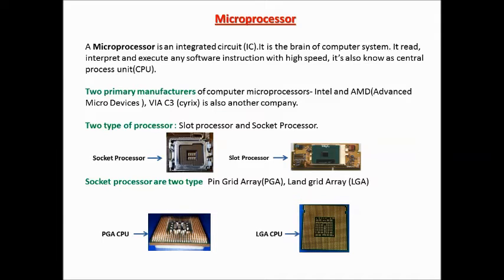A microprocessor is an integrated circuit, or IC. It is the brain of the computer system. It can read, interpret, and execute any software instruction with high speed. It is also known as the central processing unit, or CPU. Two primary manufacturers of computer microprocessors are Intel and AMD, also called Advanced Micro Devices.